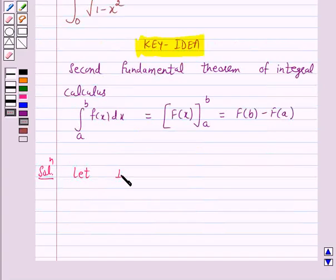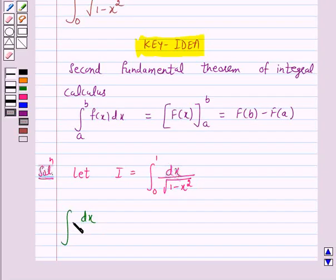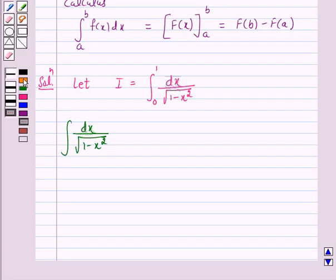Let I equal the integral from 0 to 1 of dx upon under root of 1 minus x square. We will first evaluate the indefinite integral dx upon under root of 1 minus x square. Now we know that the integral of dx upon under root of 1 minus x square is equal to sin inverse x by a plus c.